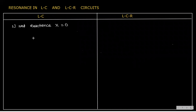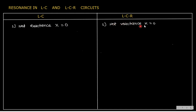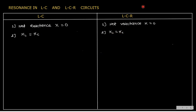The first point: in LC oscillations, net reactance X is equal to zero. In LCR also, net reactance is equal to zero. At resonance, XL is equal to XC — that is, ωL equals 1/ωC — then only resonance occurs. So in LC resonance, XL equals XC, and similarly in LCR also XL equals XC. In LC oscillation, impedance Z is equal to zero.